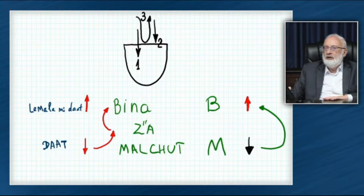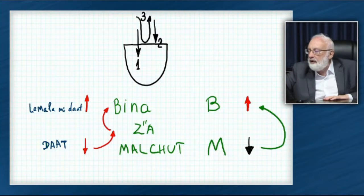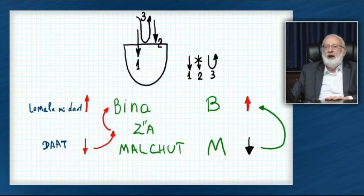This is how it works. Then, there will be the will to receive in order to bestow. This is the form of bestowal on part of the will to receive, meaning the will to receive can receive, first of all. It can not receive. This is the second thing. And it can receive, but in order to bestow. This is the third phase or stage. Is this clear?